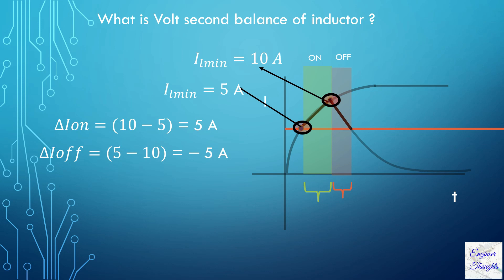And during the turn-off, it is minus 5 amps. Thus, in general form, it can be summarized as ΔI_on equals minus ΔI_off, or in other terms we can write it as ΔI_on plus ΔI_off equals zero.